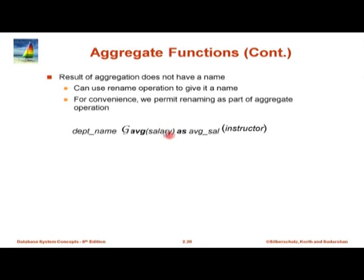If you want a name for the aggregate output to be used later, you can say 'avg(salary) as avg_salary' — this is just a syntactic thing which gives a name to that attribute. All other attributes have names because they came from the input table. There is also a rename operation in relational algebra, but we are going to skip it for simplicity. With that we are done with this particular chapter.